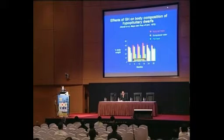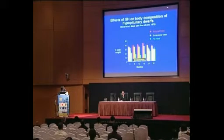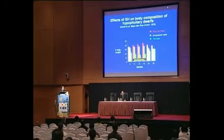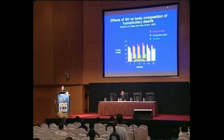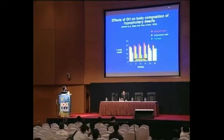You might say, so what — because the child is growing, that's why you have more body water and body cell mass. But on cessation of growth hormone, you can see there's a shrinkage of body cell mass, reaccumulation of body fat, and a loss of extracellular water. This occurs at a time when there is no further change in growth, demonstrating this remarkable change in body composition.